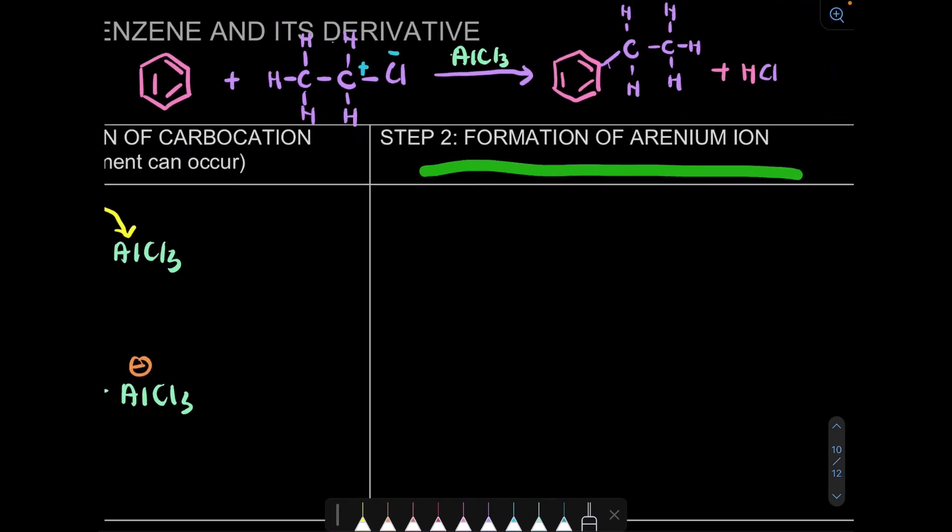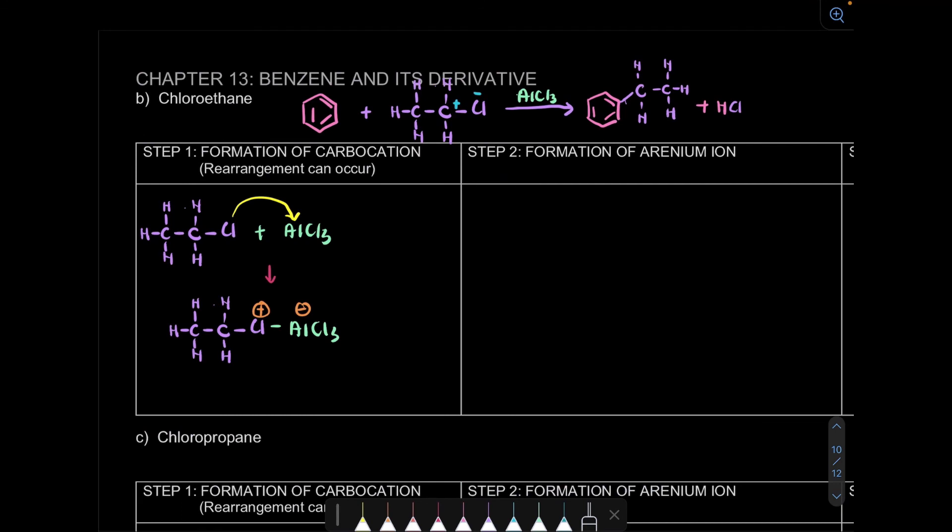Step 2 is formation of arenium ion. I will draw my benzene. Benzene will react with my complex from step 1. I'll show one step only. From rich electron from our benzene to poor electron. But which carbon? We have 2 carbons. Actually not on this carbon, because we will substitute CH3 only. Our product is bonded from the CH2. So we will go to the CH2. This bond will break. If we go from first carbon, we won't get our product. So we do the second carbon. We go here, then this bond will break.